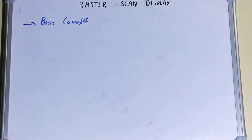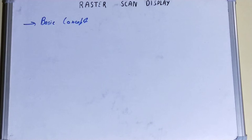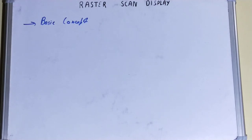Talking about raster scan display, it was one of the most common types of display used in CRT televisions and monitors. Before, when CRT televisions and monitors were in use, the most preferred kind of display was the raster scan display. But nowadays people have shifted to LEDs and LCDs, due to which the use of raster scan display also faded away.